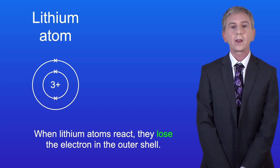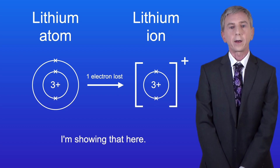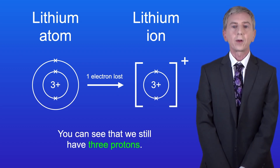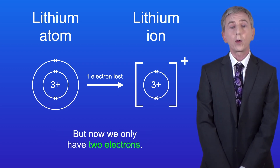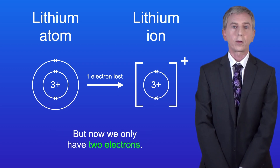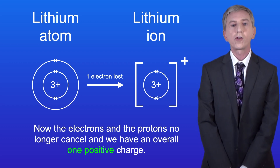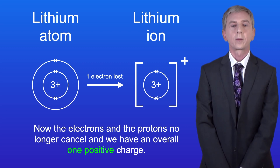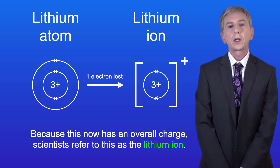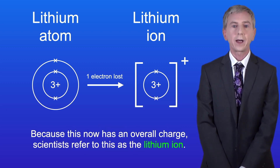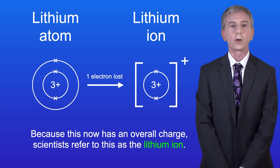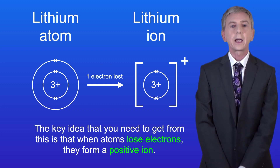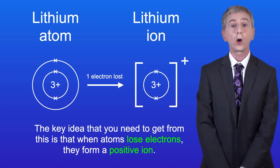When lithium atoms react, they lose the electron in the outer shell. You can see that we still have three protons, but now we only have two electrons. The electrons and the protons no longer cancel, and we have an overall one positive charge. Because this now has an overall charge, scientists refer to this as the lithium ion. The key idea is that when atoms lose electrons, they form a positive ion.